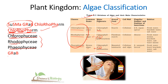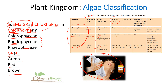Now 'Sushma GRAB' — G-R-A-B: G for green, R for red, and B for brown. So G corresponds to Chlorophyceae (green algae), R corresponds to Rhodophyceae (red algae), and B corresponds to Phaeophyceae (brown algae). That covers the class names and their colors.